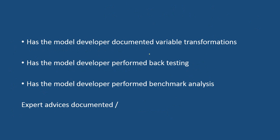The next checklist is whether the model developer has documented the variable transformation. Many times you change the variable — you do not use the same variable taken from the database directly in the model. You may come across binning, where continuous variables have been converted to categorical variables, or dummy variables have been created. All these transformation definitions should be well documented.